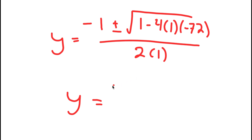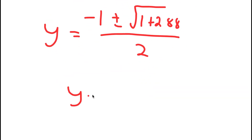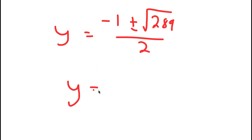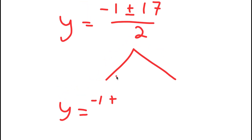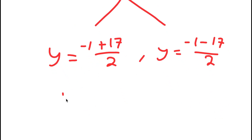This is equal to negative 1 plus or minus the square root of 1 plus 288 over 2, and this is equal to negative 1 plus or minus the square root of 289 over 2. The square root of 289 is equal to 17, so I get y is equal to negative 1 plus or minus 17 over 2. This gives me two solutions: y equals negative 1 plus 17 over 2, which gives y equals 8, and y equals negative 1 minus 17 over 2, which gives y equals negative 9.